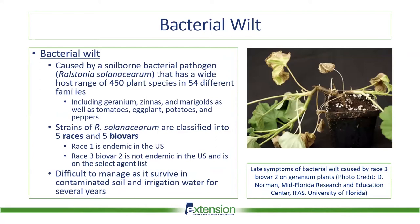The next disease is probably the most difficult of the three to control, with no fungicide options. It's called bacterial wilt, caused by the soil-borne bacterial pathogen Ralstonia solanacearum, which has a very wide host range of 450 plant species in 54 different families. These include geranium, zinnias, and marigolds, as well as common commercial vegetable crops including tomatoes, eggplant, potatoes, and pepper. You may have heard about it recently through USDA pest alerts or our ACES webpage. Ralstonia is classically classified into five different races and biovars.